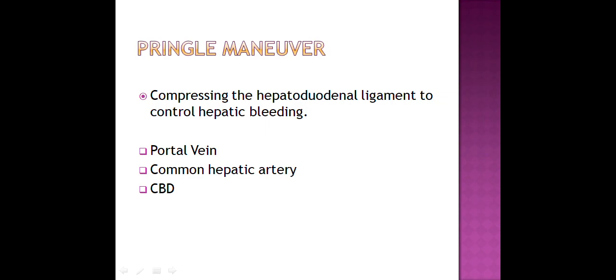Running through the ligament are three very important structures. First one is the portal vein, second one is the common hepatic artery, and third one is the CBD, that is the common bile duct.